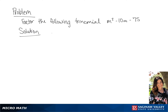We are factoring m squared minus 10m minus 75. Since 75 is negative, we are going to put m plus in the first binomial and m minus in the second. Now we're going to find factors of negative 75 that when added together equal negative 10.